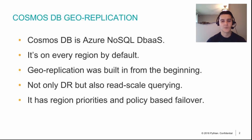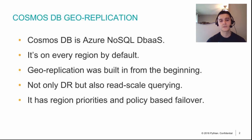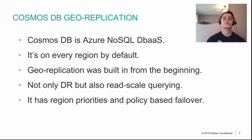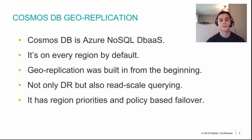As a quick refresher, Cosmos DB is Azure's NoSQL Database as a Service offering and it is called a Ring Zero service by Microsoft, which basically means that Cosmos DB gets deployed on every Azure region by default when those regions open. This means Cosmos is very widespread around the world, and because geo-replication was built in from the very beginning, you can geo-replicate your database from wherever the primary is to any of these global locations.